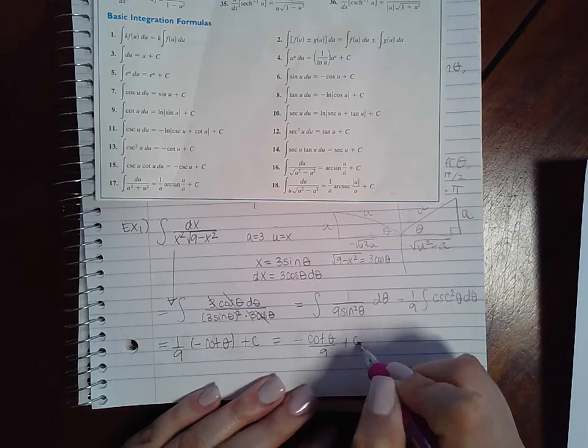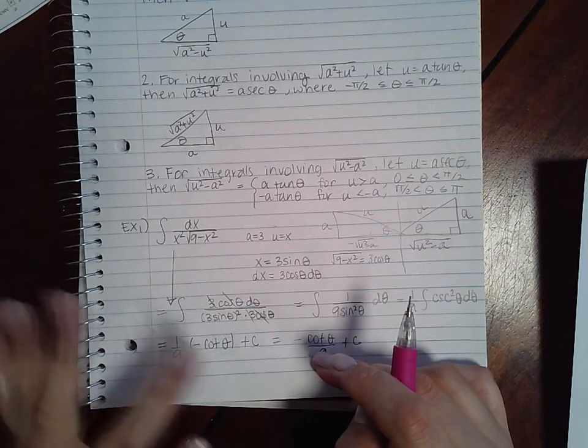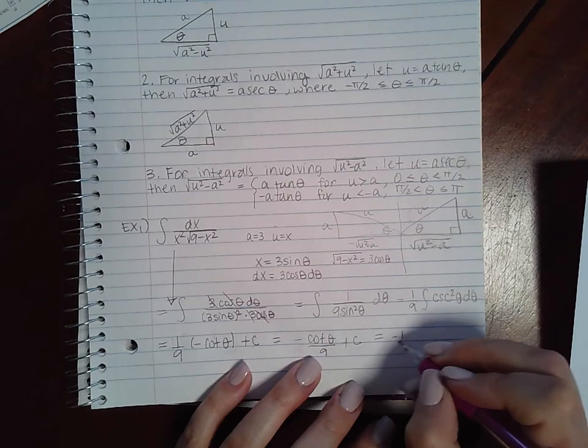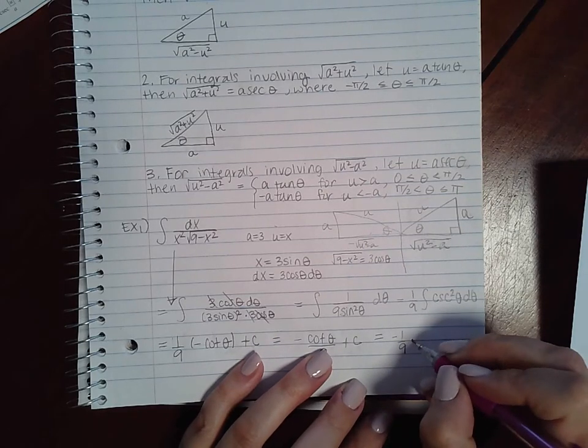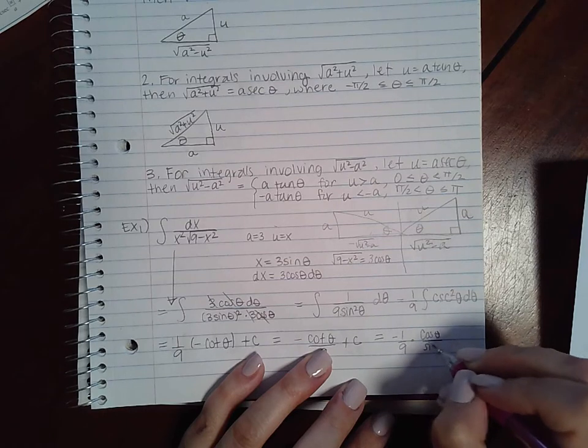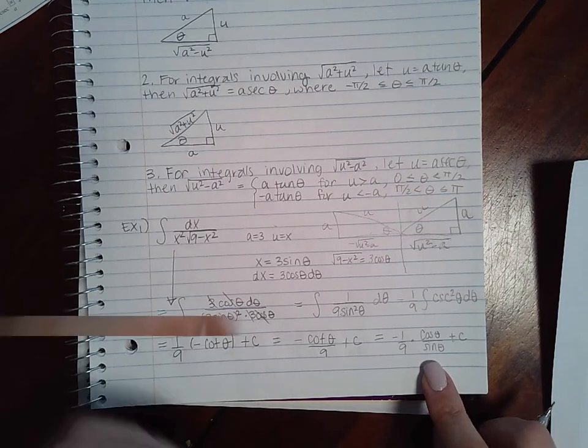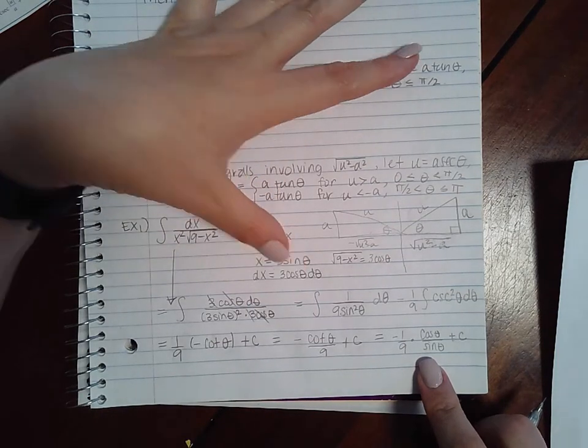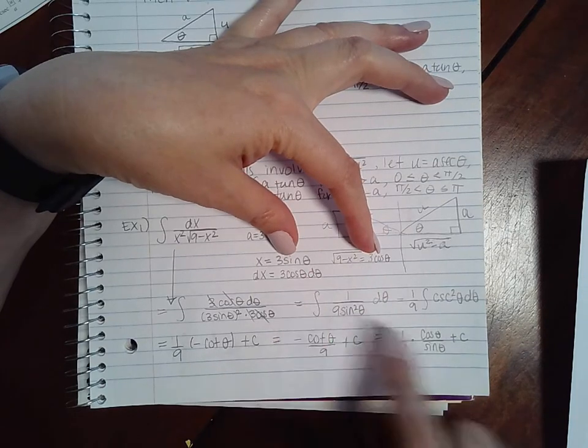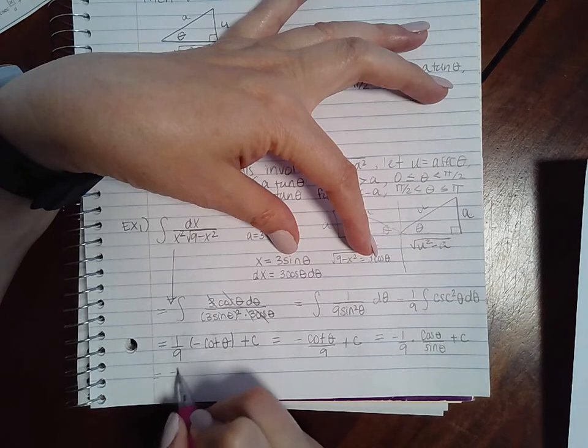We have to be careful because cotangent theta means what? Cotangent theta is cosine over sine. I have to back substitute up here, so I'm going to back substitute using these different pieces of information, these two here. Not the dx because I don't have any more d thetas.